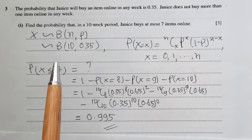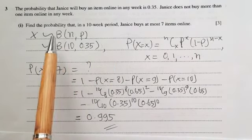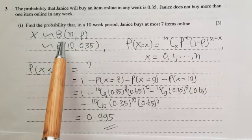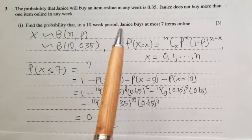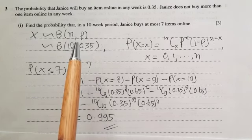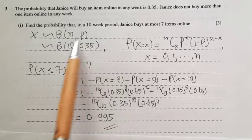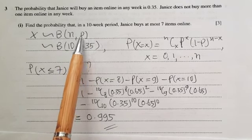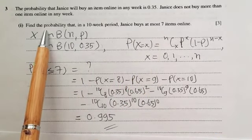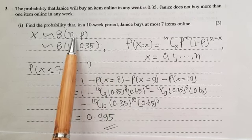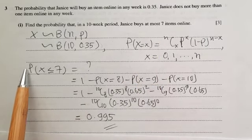Here, X is the number of items bought in a period of n weeks. X is binomially distributed with parameters n and p, where n is the number of trials and p is the probability of success. Here, for the 10-week period, n is 10 and p, the probability of success, is 0.35. We need to find the probability that in a 10-week period Jenny buys at most seven items.